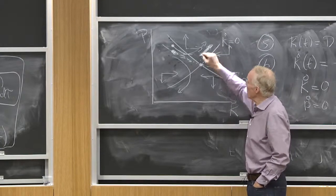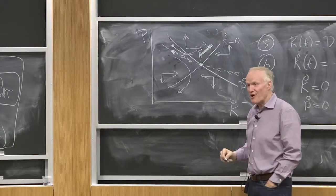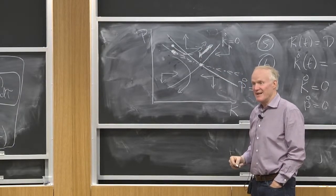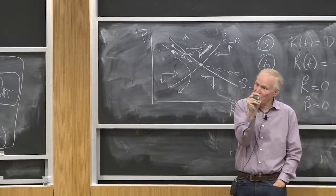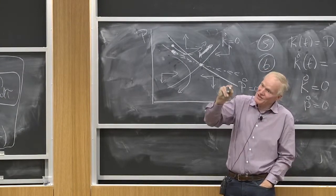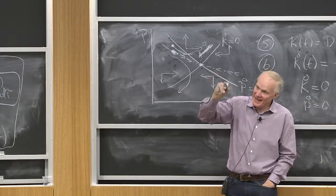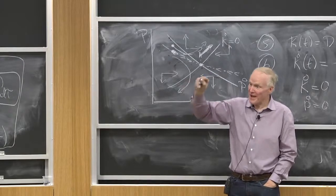But still, even in that problem, there's a unique price you can start with at the beginning. In that case, you have to find the starting point that when it goes along this explosive path, it hits the saddle path at the right date.